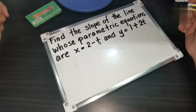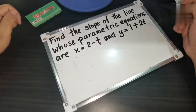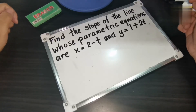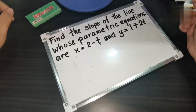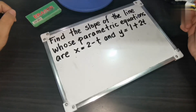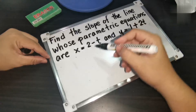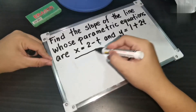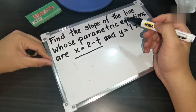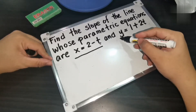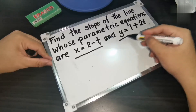Our task for this video lesson is to find the slope of the line whose parametric equations are x is equal to 2 minus t and y is equal to 1 plus 2t. So there are two equations being given here: your first equation is x is equal to 2 minus t, and your second equation is y is equal to 1 plus 2t.